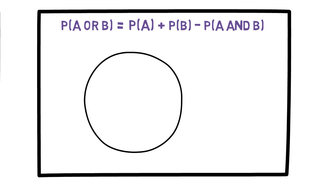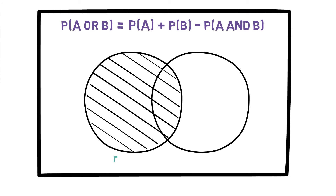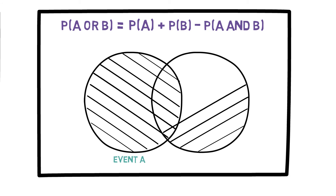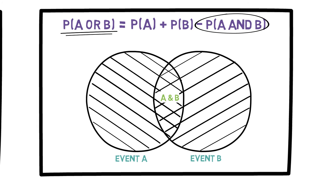An event diagram is very helpful in explaining this concept. Say this is event A and this is event B. If we are looking for A or B, the overlapping part is A and B, which is added twice. So we subtract it from the formula to make sure we only obtain the probability of A or B.